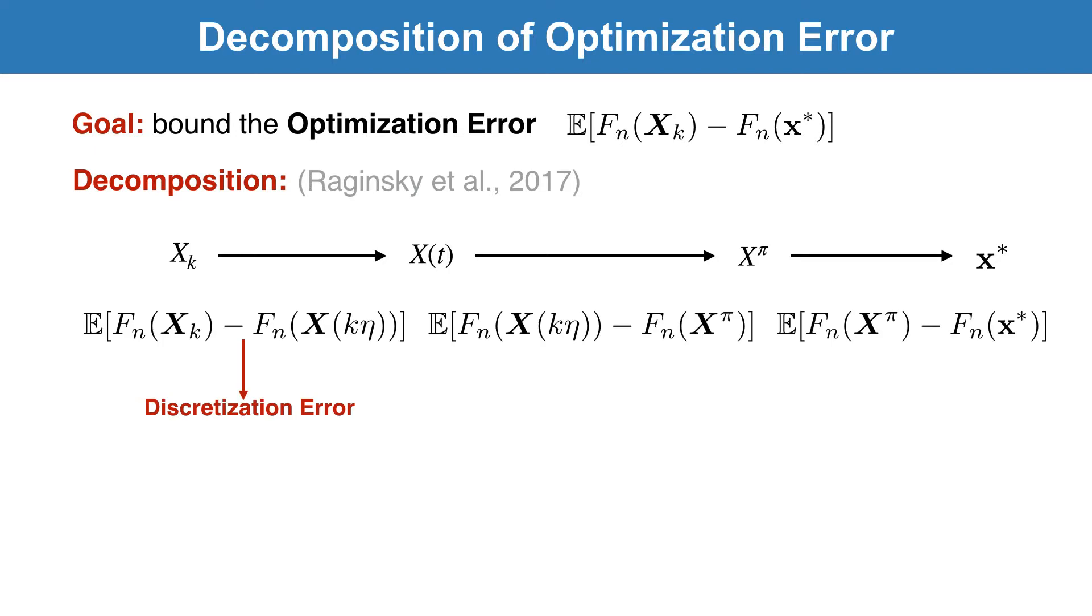The first term is the discretization error between the discrete time process and the continuous-time dynamics. The second term shows how fast the continuous-time dynamics converges to its stationary distribution. And the third term is the distance between the stationary distribution and the global minimizer.